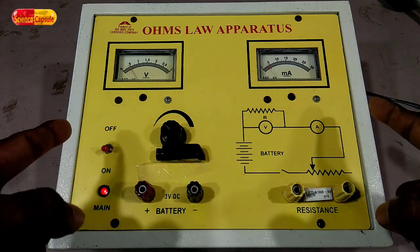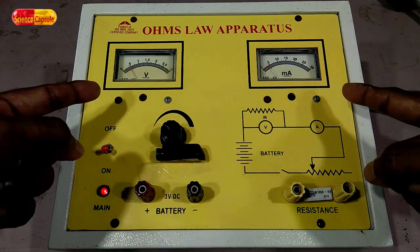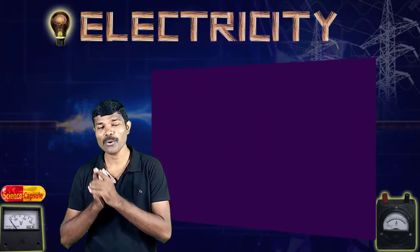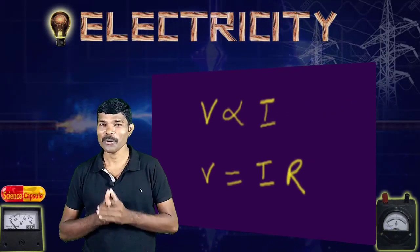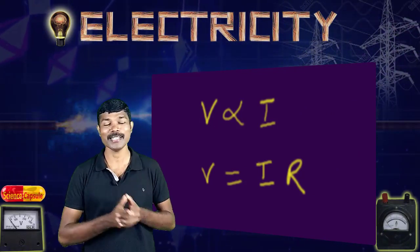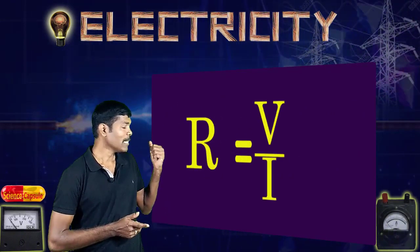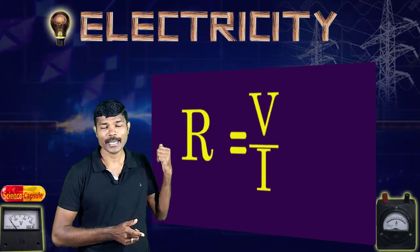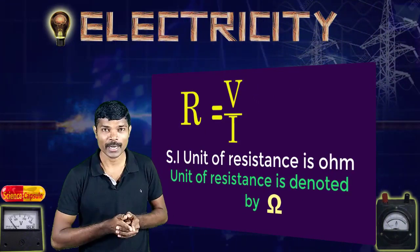This is what Ohm's Law says: potential difference is directly proportional to current flowing through the circuit. From this, V is directly proportional to I, and V = IR. Here R is the constant called resistance. Ohm's Law states that the potential difference applied across the conductor is directly proportional to the current flowing in the circuit. So R = V/I. The SI unit of resistance is Ohm, denoted by the symbol Omega (Ω).